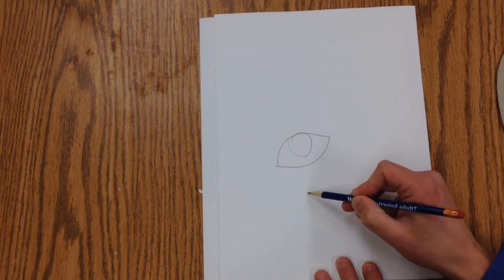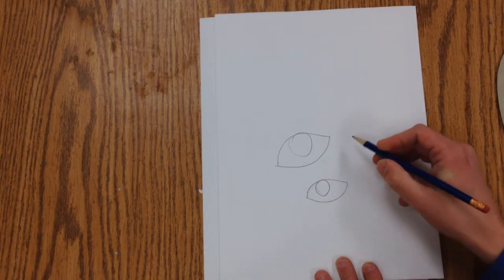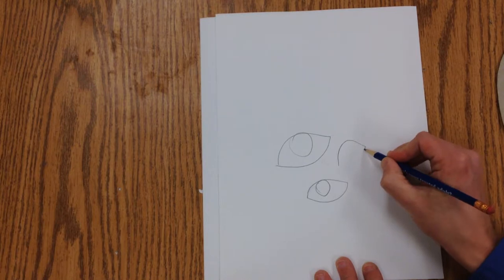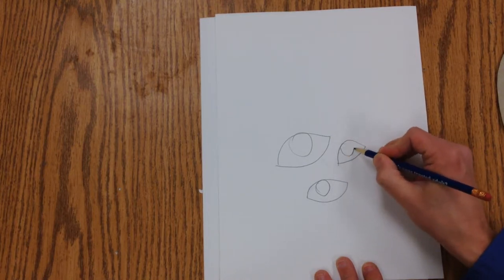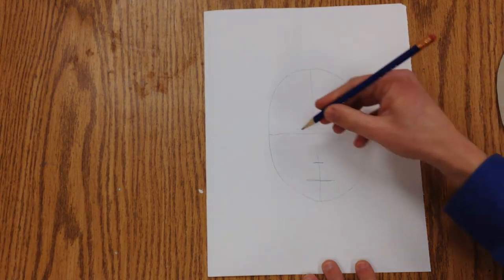Some eyes are higher on the top than others on one side than the others. Some of them are really curved at the top, flat on the bottom. You need to look in the mirror and see what your eyes actually look like.